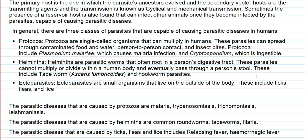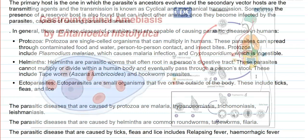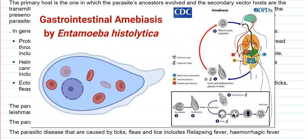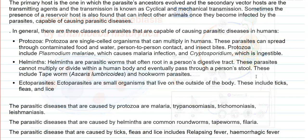Protozoans are single-celled organisms that can multiply inside humans. These parasites can spread through contaminated food and water. For example, Entamoeba histolytica is an example of a protozoa capable of causing infection. These parasites can easily spread through contaminated food and water, and sometimes even person-to-person contact can also spread them.